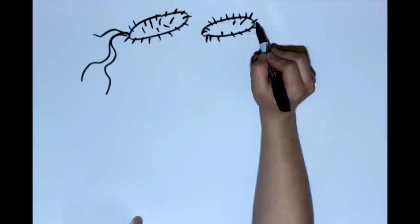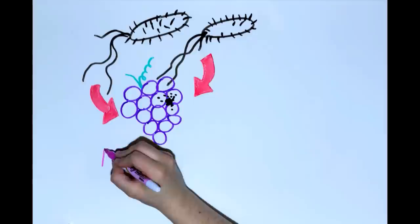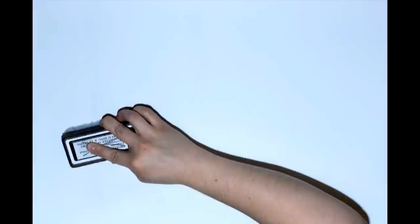Instead, he gave an explanation called the germ theory. Germs, which are microorganisms, are all around us. He demonstrated that they were capable of spoiling foods, like grapes, when they come in contact with them. There was nothing spontaneous about it.